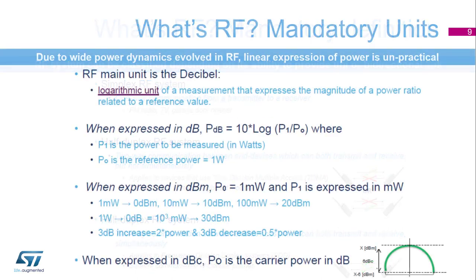Mandatory units: due to the wide power dynamics involved in RF, linear expression of power is unpractical. In RF the main unit is the decibel. It is a logarithmic unit that expresses the magnitude of a power ratio related to a reference value. Power level is expressed as P = 10 × log(P1/P0). When expressed in dB, P1 is the power to be measured in watts and P0 is reference power of 1 watt. When expressed in dBm, P1 is power in mW and P0 is 1 mW.